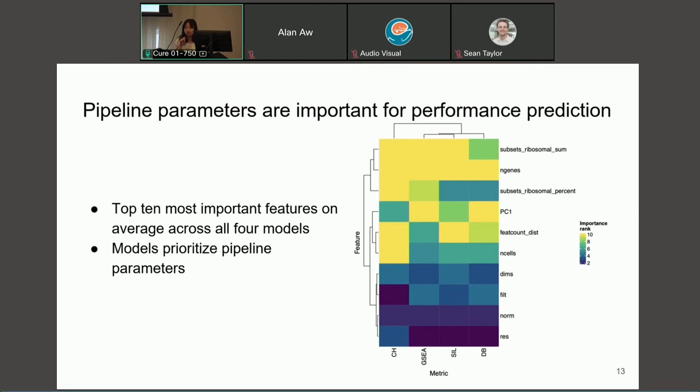Then we looked at which dataset features were important essentially for these predictions. And by looking at the top 10 most important features on average across the four metrics, we found that our models mostly prioritize pipeline parameters for predicting performance such as the clustering resolution and normalization method.